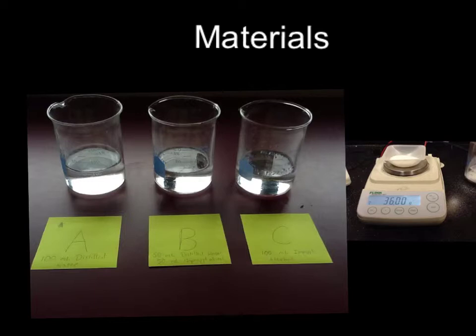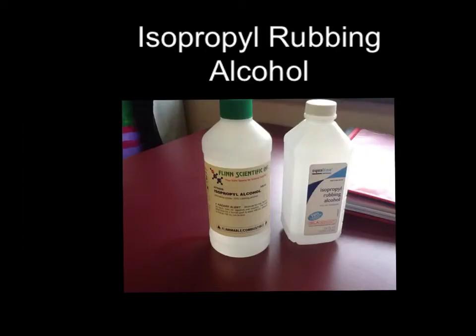Each beaker was at room temperature, which is approximately 21 degrees Celsius. In each beaker, 36 grams of table salt was poured in and stirred for four minutes, and after stirring, we recorded our observations. We used the isopropyl rubbing alcohol because it is slightly less dense than water. Water has a density of 1 gram per milliliter, and the alcohol had a density of 0.786 grams per milliliter.